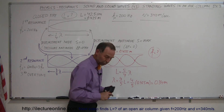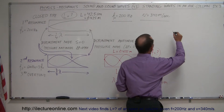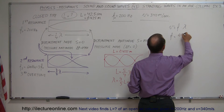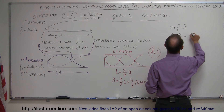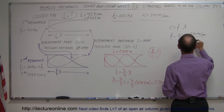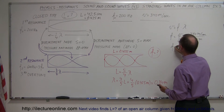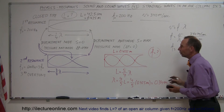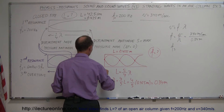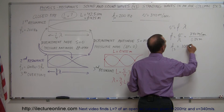Now we use the relationship between velocity, frequency, and wavelength. Velocity equals frequency times wavelength, which means frequency equals velocity divided by wavelength. The velocity of sound is 340 meters per second, and the wavelength is — interestingly — 0.34 meters. So without a calculator, we can say the frequency required for the third resonance is 340 divided by 0.34, which equals 1,000 hertz.